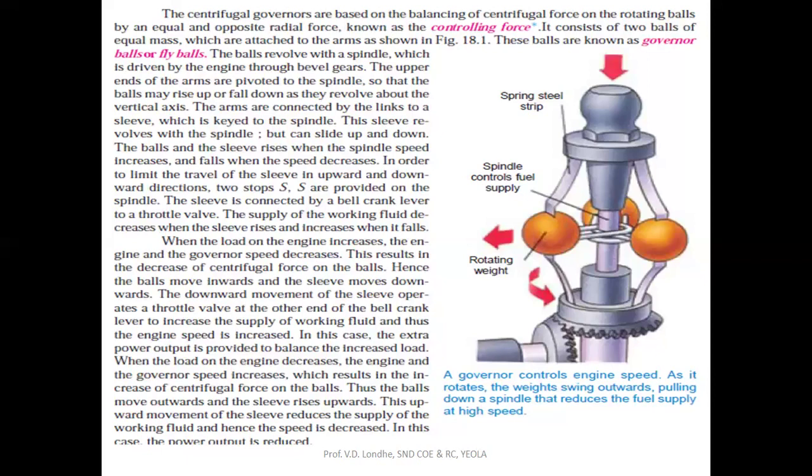When extra power output is required, it is provided so as to balance the increased load. When the load on the engine decreases, the engine and governor speed increases, which results in the centrifugal force on the balls increasing. The balls move outward and the sleeve moves upward. This upward movement of the sleeve reduces the supply of fuel towards the engine. In this way, the centrifugal governor basically works.